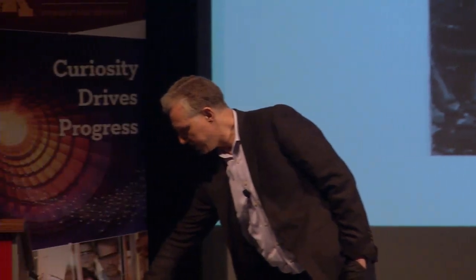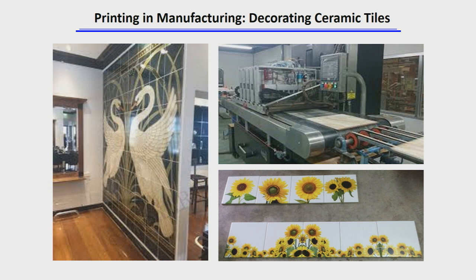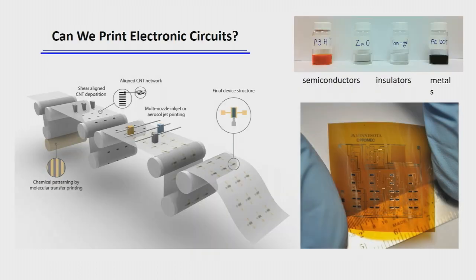But what you might not have appreciated is that printing technology has moved into other areas of manufacturing. For example, if you go to the tile shop and you're interested in buying tile for your kitchen or your bathroom, it's likely that the designs that you see have been inkjet printed in large printers that are designed to take slabs of tile and print on them with hundreds of nozzles, maybe thousands of nozzles. The ink is then fired and set into the ceramic. And so this idea that printing can be used in other areas of manufacturing has caused us and many other groups around the world to ask, well, can we print electronic circuits?